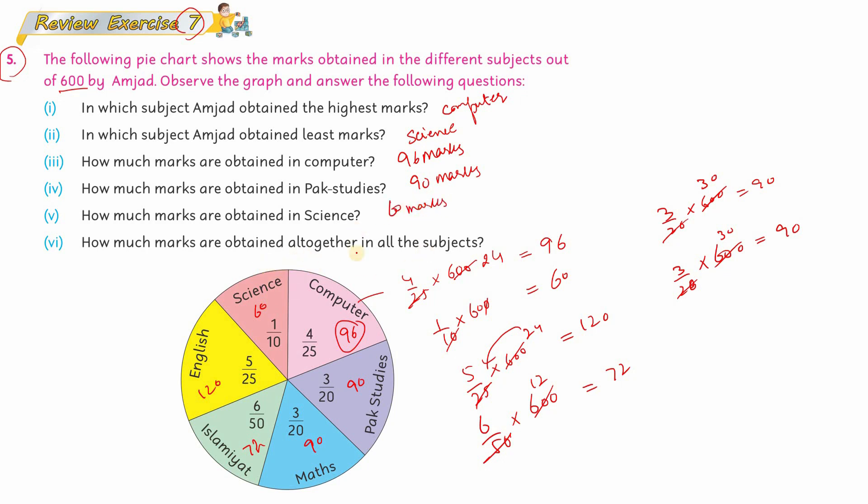How much marks are obtained in Science? Look, Science has 60 marks, so write 60 marks. How much marks are obtained all together in all subjects? Now you will add all these values. Look: 96 plus 60 plus 120 plus 72 plus 90 plus 90. When you add all these, the total becomes 528.